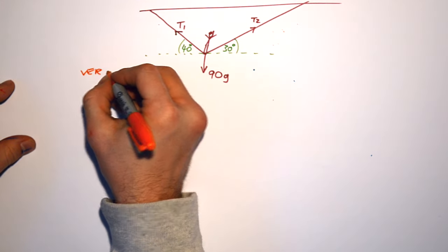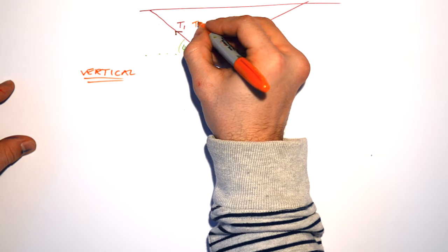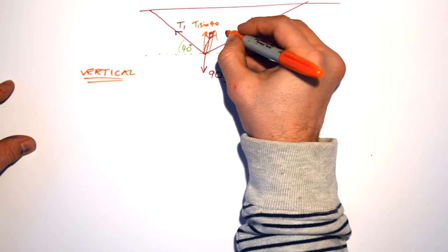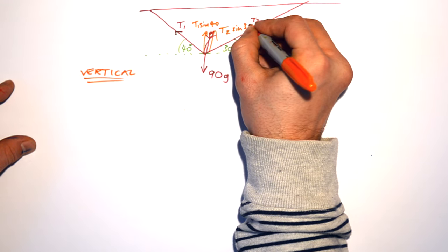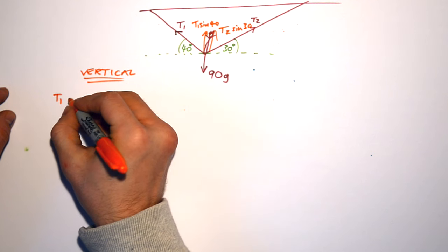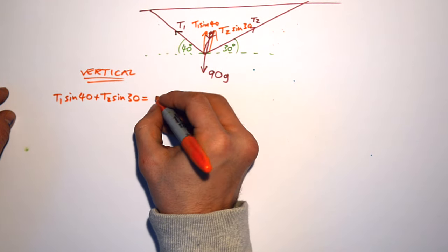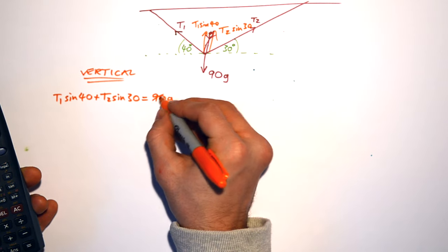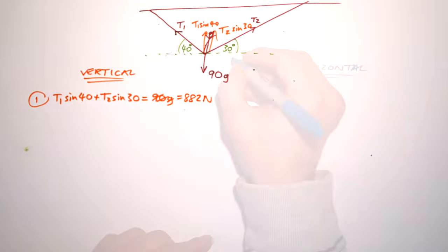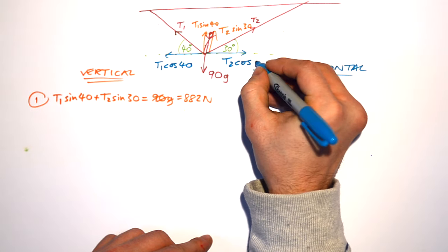Starting with the vertical equilibrium: the vertical components of T1 and T2 must balance the weight. Using sine because we turn away from the angle: T1 sin 40 + T2 sin 30 = 882 Newtons. That's equation 1. For horizontal equilibrium, we turn through the angles so we use cos: T1 cos 40 = T2 cos 30. That's equation 2.